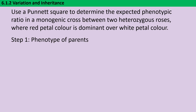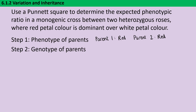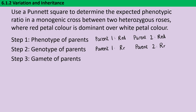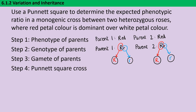Step one is to write down the phenotype of the parents. We know they're heterozygous, and because red is dominant over white, both parents are going to have red petals. Step two is to write down the genotype. We know they're heterozygous, so the genotypes are big R, little r. We use R rather than W because red is dominant over white, and also because R has very different capitals and lowercase forms. Step three is to write down what each gamete could contain — a big R from each parent and a little r from each parent — and draw a circle around the gametes to show their genotype.